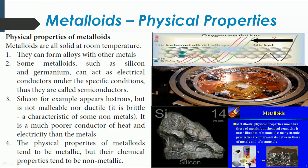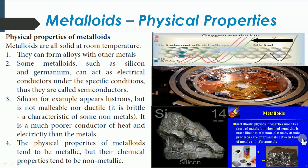Their physical properties are more like metals. When you look at the color, appearance, density, and other properties like melting and boiling points, they are similar to metals. Whereas all their chemical behavior is more like that of non-metals. So their physical properties are like metals, while their chemical properties are like non-metals. Many atomic properties are intermediate between metals and non-metals — that's the reason they are called metalloids or semi-metals.